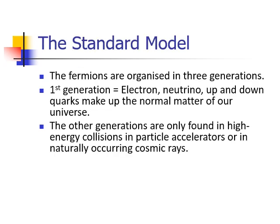The fermions themselves have three different generations. The first one consists of an electron and a neutrino and up and down quarks. These make up all the normal matter in our universe.